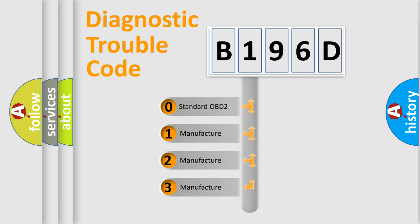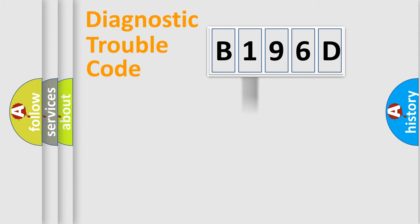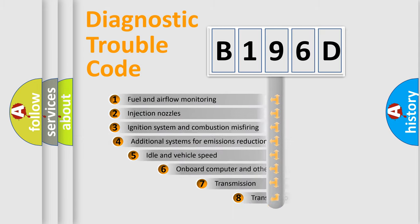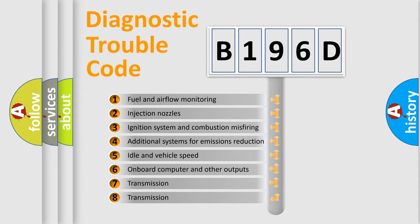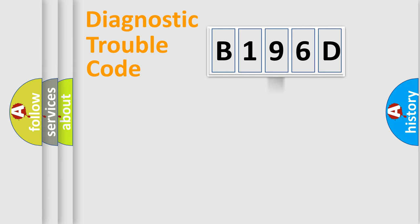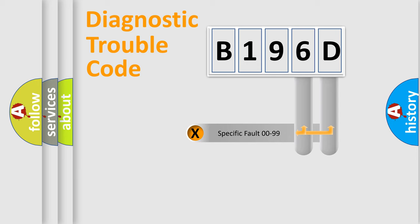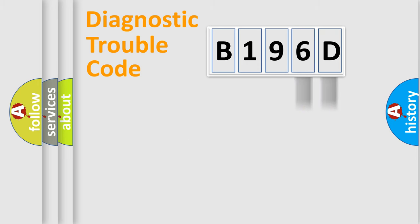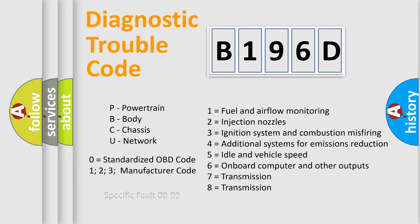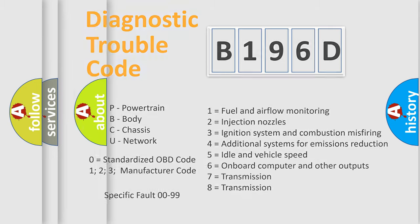If the second character is expressed as zero, it is a standardized error. In the case of numbers 1, 2, or 3, it is a more specific expression of a car-specific error. The third character specifies a subset of errors. This distribution is valid only for the standardized DTC code, where only the last two characters define the specific fault of the group. Such a division is valid only if the second character code is expressed by the number zero.